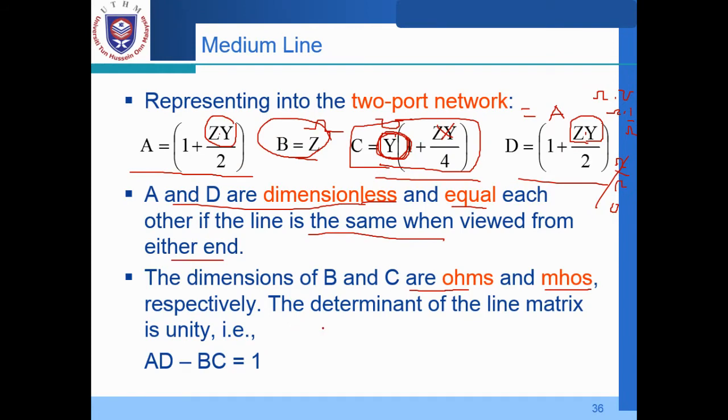So the determinant of the line matrix is unity. So this is the determinant: AD minus BC. Again determinant of the matrix, the line matrix is equal to 1 or unity.